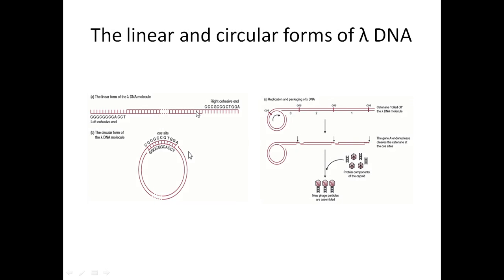There are two functions of these cos sites. First, as I just described, they form the circular DNA molecule. This is an important point — if the prophage is to be formed, circularization of the DNA is very important, because only once it is in circular form can it be inserted into the bacterial genome. That is the first importance of cos sites.